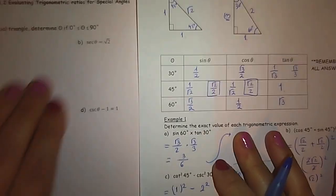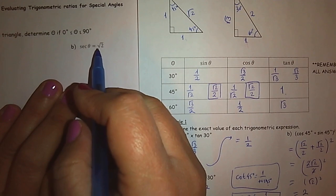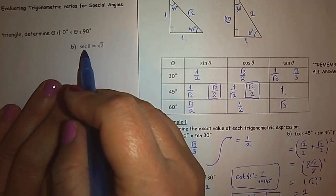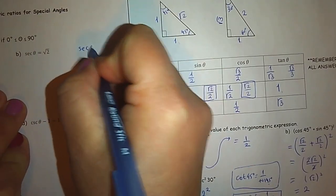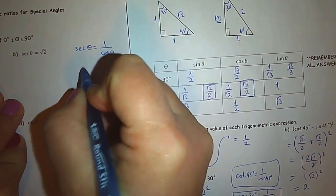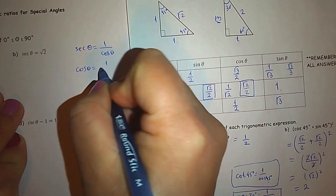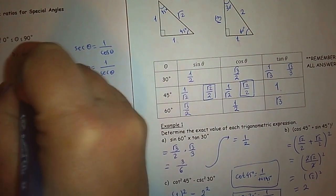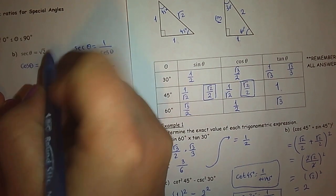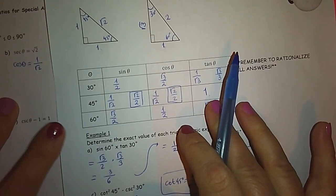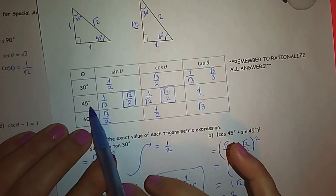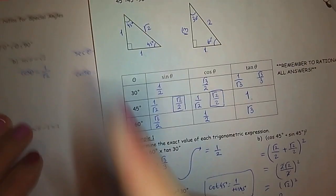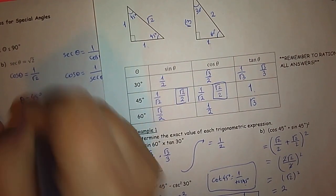Let's look at part b: secant theta equals root 2. To work with this we need to convert it to a primary trigonometric ratio. We know that secant theta is one over cosine theta, so cosine theta equals one over secant theta. Then cosine theta equals one over root 2, or root 2 over 2. Cosine theta is root 2 over 2 when theta is 45 degree.